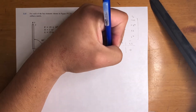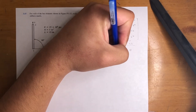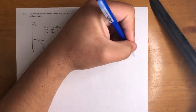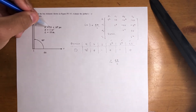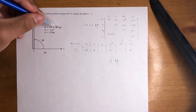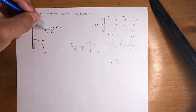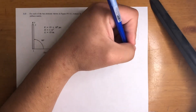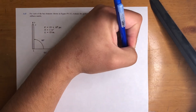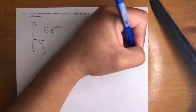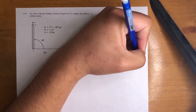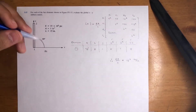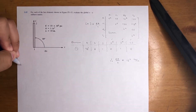Last thing before we get the answer: EA over L. E times A is 15 times 10 to the 6, divided by L which is 15, giving us 10 to the 6 pounds per inch. That's the unit.